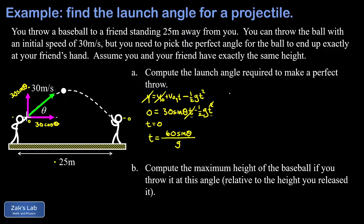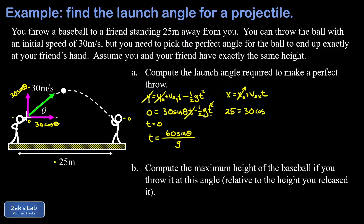Now we look at the horizontal analysis. We have x equals x-naught plus v-naught-x times t. There is no acceleration in the horizontal direction for a projectile. Our initial x-coordinate is zero, our final x-coordinate is 25 meters (the given range), and we plug in the initial x-velocity of 30 cosine theta. Again, this equation has two unknowns: the launch angle and the flight time.